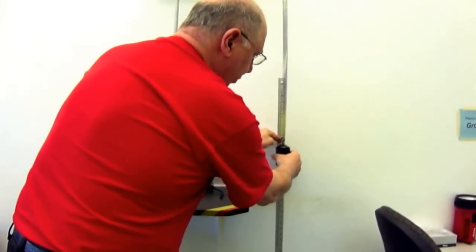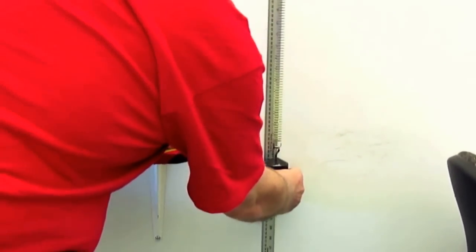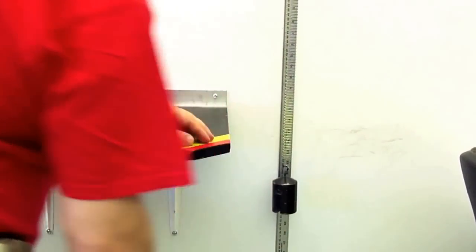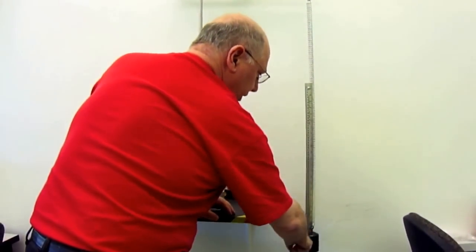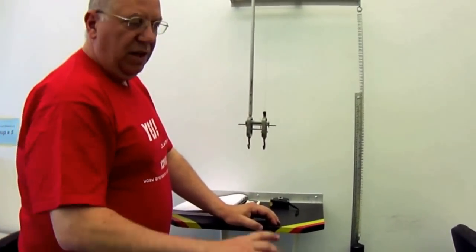You measure where the spring was initially on this meter stick that's attached to the wall. You release it so it doesn't bounce around and then you measure what the new position of the end of the spring is. The difference of these two positions with and without the mass will be x.